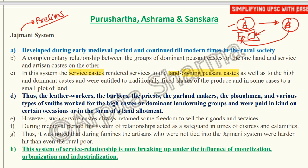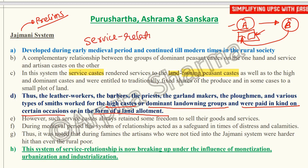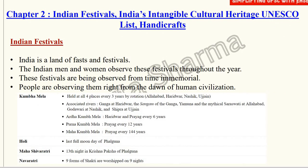Leather workers, barbers, priests, garland makers, plowmen, and various types of smiths worked for high-caste or dominant land-owning groups. They were paid in kind on certain occasions or in the form of land allotment. This was the system of service relationships. Now, because of urbanization and industrialization, this system is no longer prevalent.